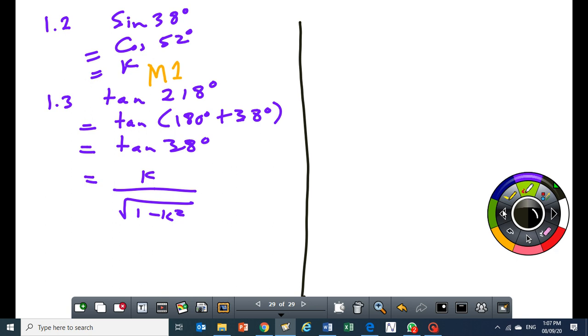So, for method 2, I'll just write my question, tan 218 degrees, which is equal to tan 180 plus 38 degrees. And that will give you tan 38 degrees.